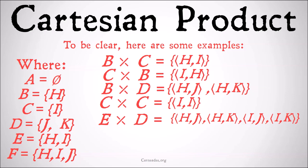So each member of E is paired with each member of D to get each of those pairings off.